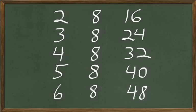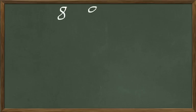We'll work more with liquid measure in another lesson, but we just learned that 6 times 8 are 48. In our next problem, if 1 dozen apples cost 9 cents, how many cents would 8 dozen apples cost? We're going to multiply 8 times 9 because 1 dozen costs 9 cents and we want to know how much 8 dozen cost. 8 is our multiplier — 8 times 9 are 72, so those 8 dozen apples cost 72 cents.